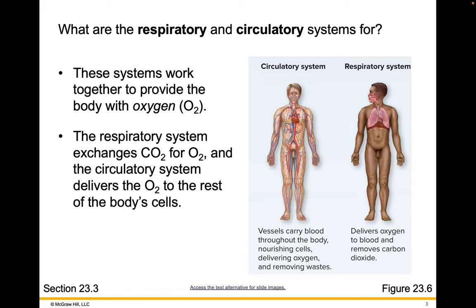So what are the respiratory and circulatory systems for? These systems work together to provide the body with oxygen. They also exchange oxygen gas with carbon dioxide gas produced by the cell — they bring in the O2 that your cells need and remove the CO2 that they produce.